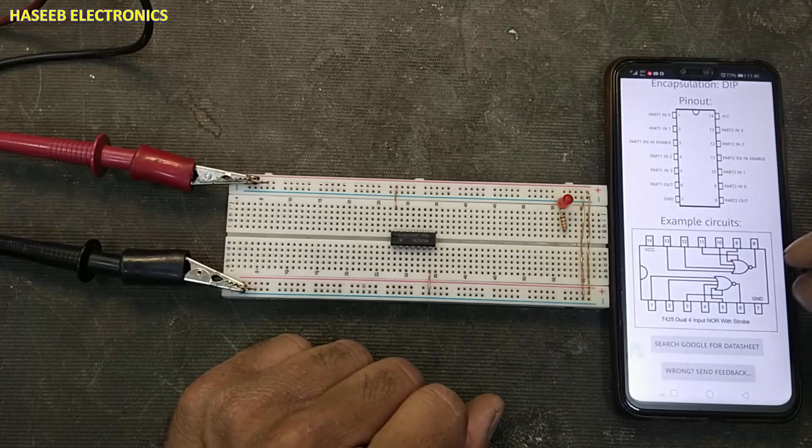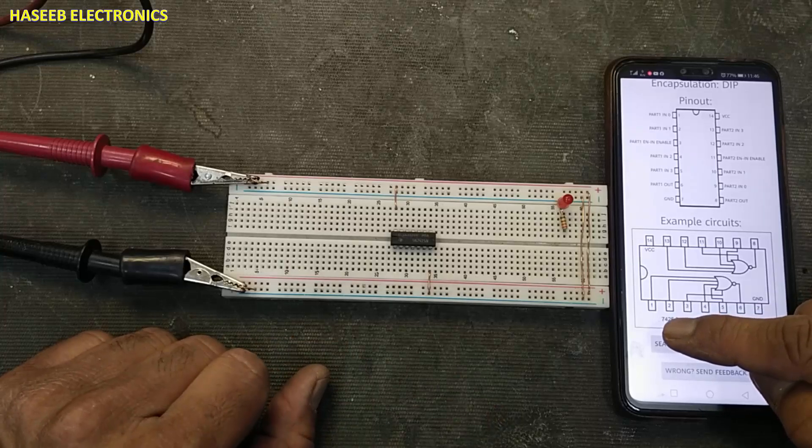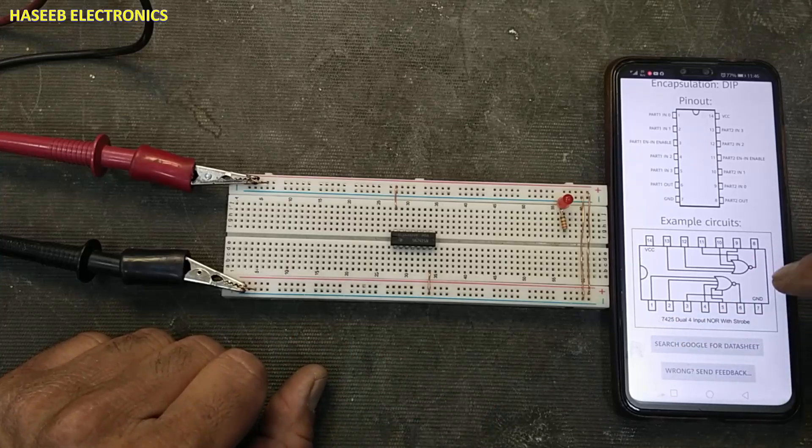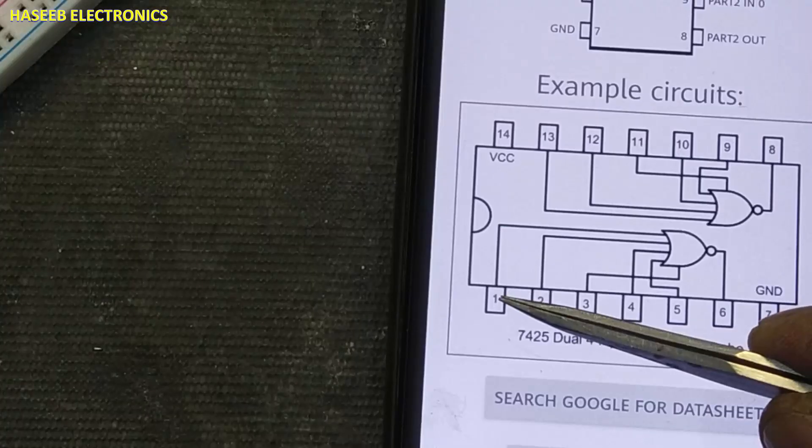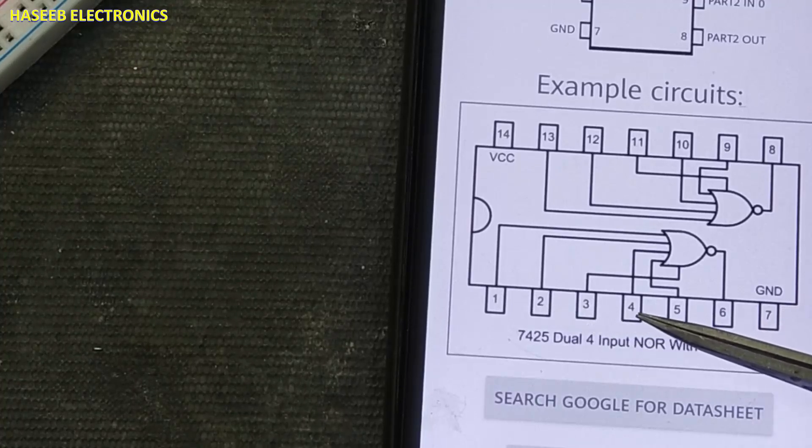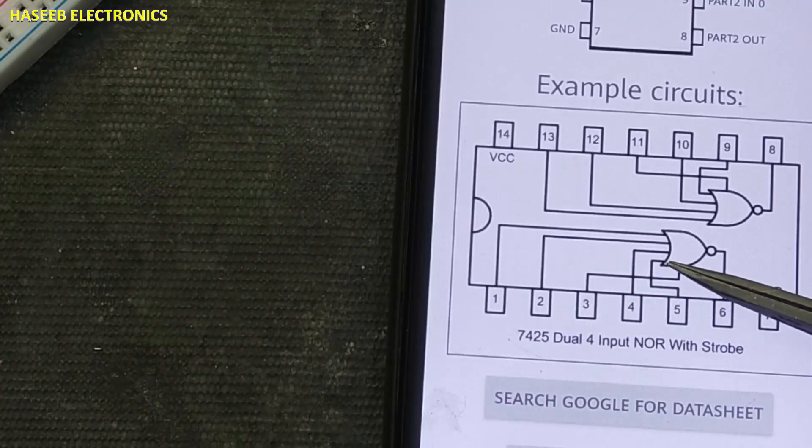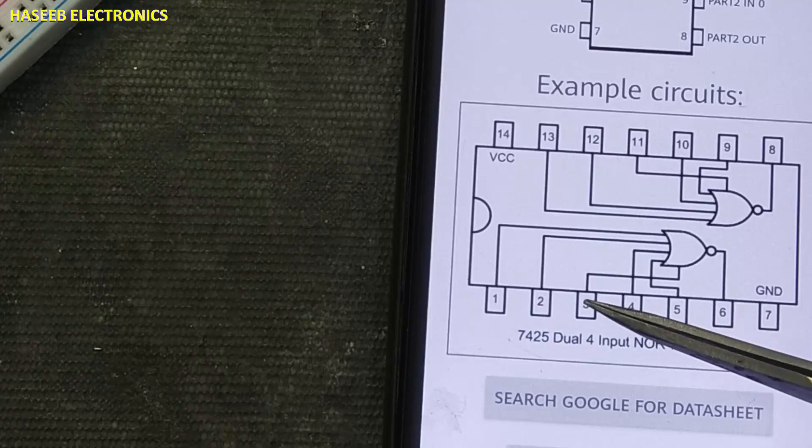If you see its internal structure, two gates inside that are NOR gate. Pin 1, 2, 4 and 5 are input pins.